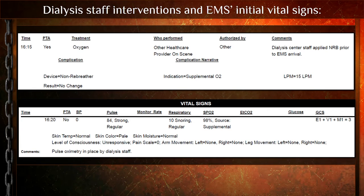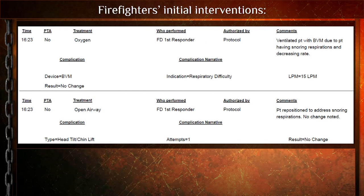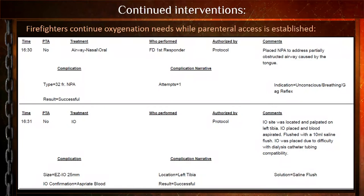An initial pulse ox of 98 was obtained with snoring respirations. The patient was found unresponsive on the dialysis floor with a non-rebreather mask in place. When fire arrived on scene, they quickly recognized a problem and moved from a non-rebreather to BVM. They also made a great decision to open the airway for the snoring respirations and placed a nasopharyngeal airway. That recognition was very fast — it wasn't something wrong with the dialysis staff; there had been a medical change and the first responders caught it quickly.